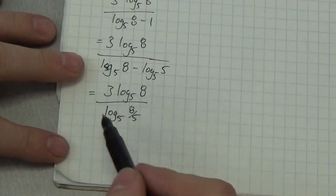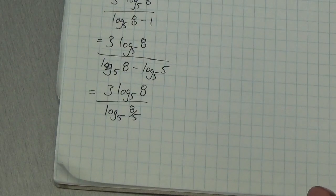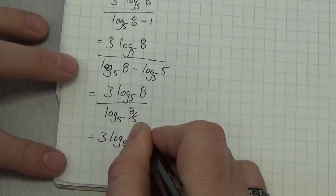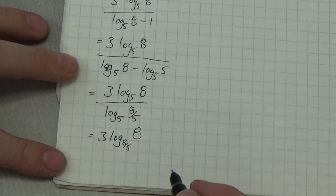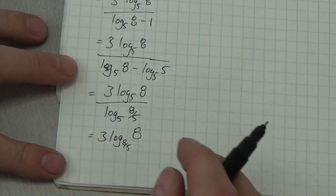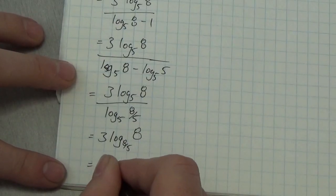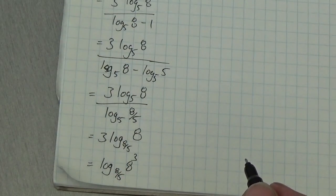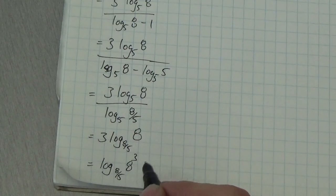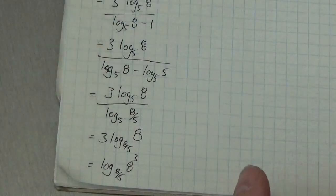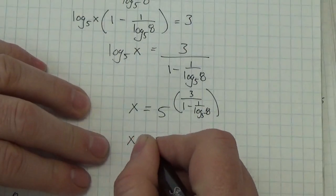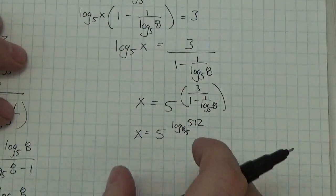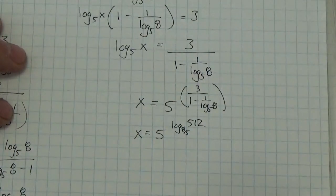Now this is in the form of the change of base formula, so 3 times log base 5 of 8 over log base 5 of (8/5) becomes 3 times log base (8/5) of 8. I could also move that 3 up as an exponent and make this a single logarithm: log base (8/5) of 8 cubed. And 8 cubed is 512, so this is log base (8/5) of 512. So the final answer is x equals 5 to the power of log base (8/5) of 512. That's a much cleaner solution.